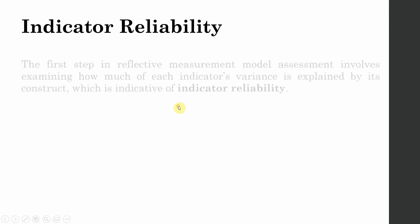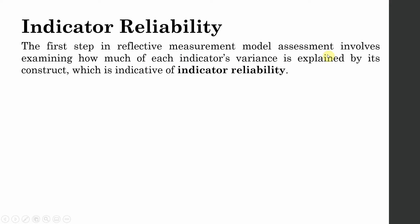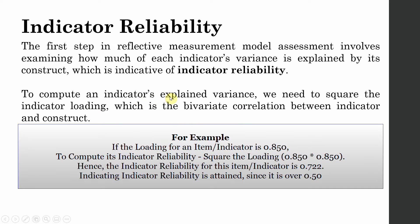How do you assess indicator reliability? The first step in reflective measurement model assessment involves examining how much each indicator's variance is explained by its construct, and this is called indicator reliability. To compute an indicator's explained variance, we need to square the indicator loading, which is the bivariate correlation between an indicator and the construct. The square of your loading tells you how well a particular item is representing the underlying construct.